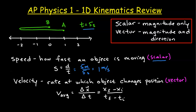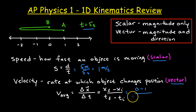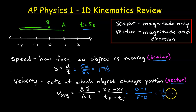Velocity is the rate at which an object changes position, and it is a vector because it has a direction. The average velocity is the displacement divided by the time. The displacement is the final position minus the initial position — zero minus one — and the time is the final time minus the initial time. Assuming it starts at zero seconds and takes five seconds, we get negative one divided by five, which is negative 0.2 meters per second. The negative means the object is moving towards the left, if we're making right positive.